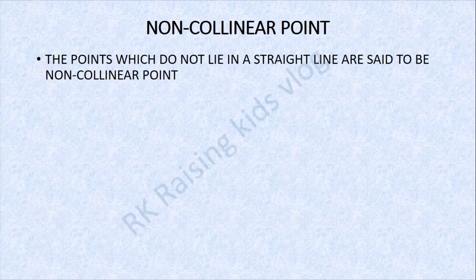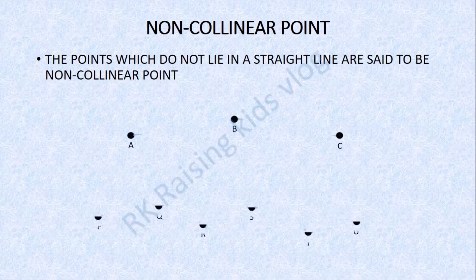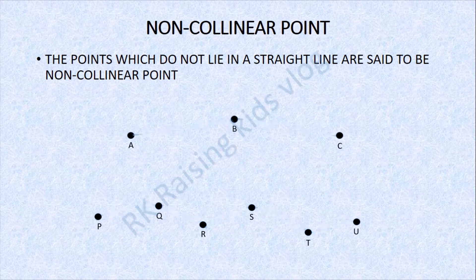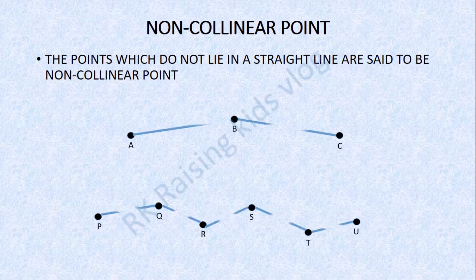Next is non-collinear points. The points which do not lie in a straight line are said to be non-collinear points. They are not lying on a straight line — only a few points are lying on the other side of the line. The points A, B, C do not lie on a straight line, so they are called non-collinear points.